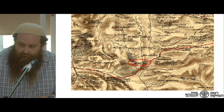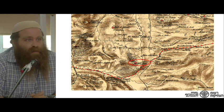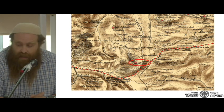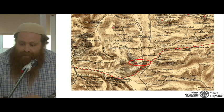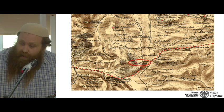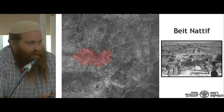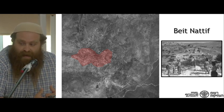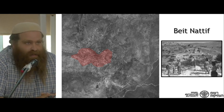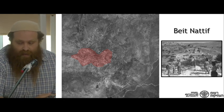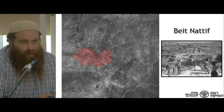Beit Natif appears on the PEF maps along the Roman road leading from Beit Guvrin to the southwest to Jerusalem in the northeast. For many people it is the site of an Ottoman village or a British Mandate village, but its roots are much deeper. It was mentioned twice in the writings of Josephus under its Greek name, Bethelophemen, as one of the ten toparchies, the administrative units of the Herodian government. It was a major site all the way from the Herodian dynasty until 1948.